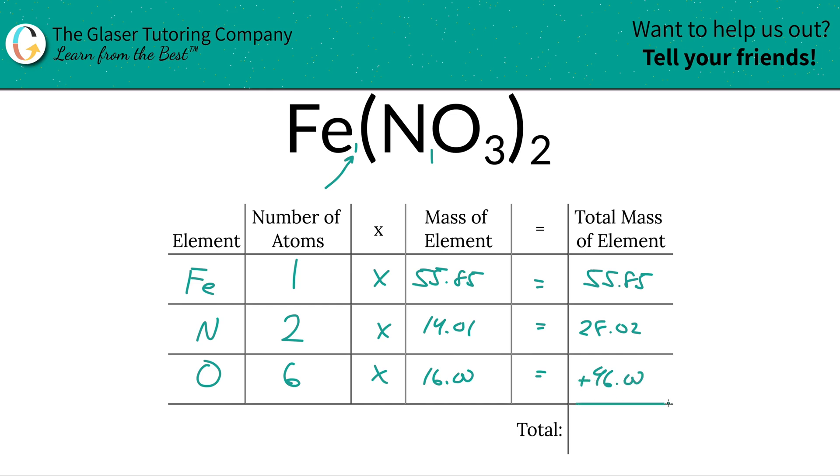So to find the total mass of the entire compound now, that looks like 96, should be two zeros. Now to find the total mass of the entire compound, just simply add up this column. And when we do that, we find a total mass here of about 179.87.